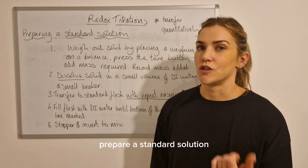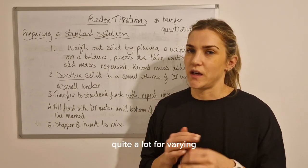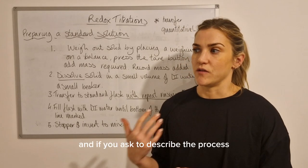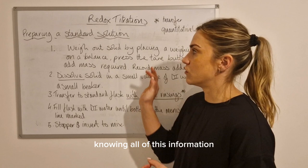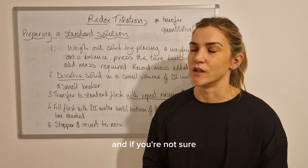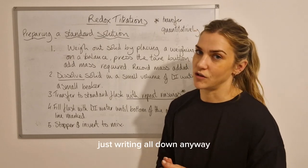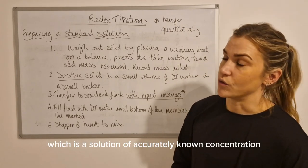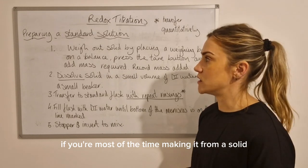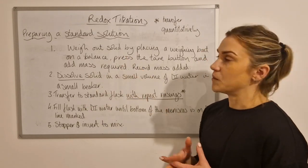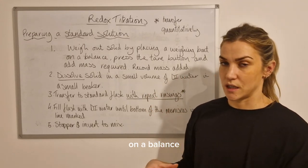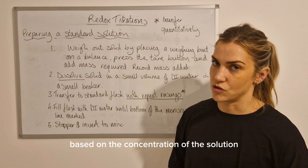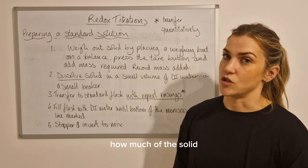Now we're going to look at how we prepare a standard solution. This gets asked about quite a lot for varying numbers of marks depending on whether you need to calculate the amount of the solid you need to weigh out or if you're asked to describe the process of weighing by difference. Knowing all of this information and if you're not sure what information they want in the exam, just writing it all down anyway won't go amiss. A standard solution, which is a solution of accurately known concentration, if you're most of the time making it from a solid, you would weigh out the solid by placing the weighing bottle on a balance and pressing the tare button and then adding in the mass required.